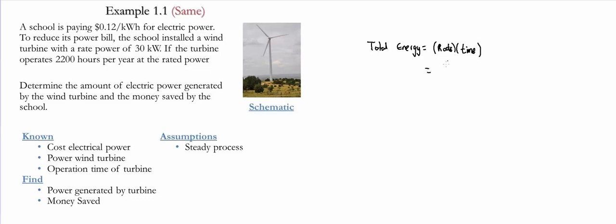So in this case, we have a rate of 30 kilowatts, and then it runs for 2200 hours. We multiply these two numbers, and we obtain a value of 66,000 kilowatt hours.